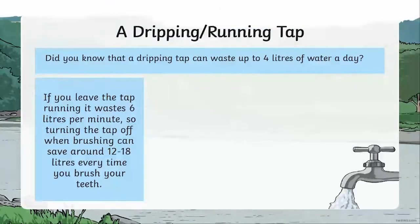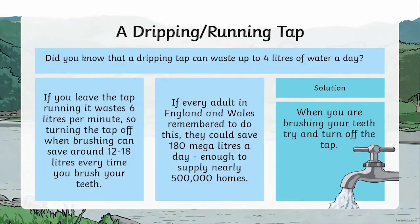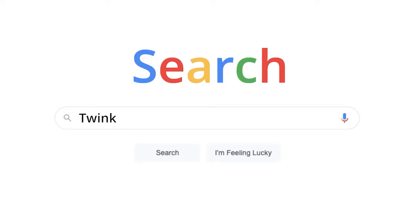If you leave a tap running, it wastes six litres per minute. So turning a tap off when brushing your teeth can save about 12 to 18 litres every time you brush your teeth.